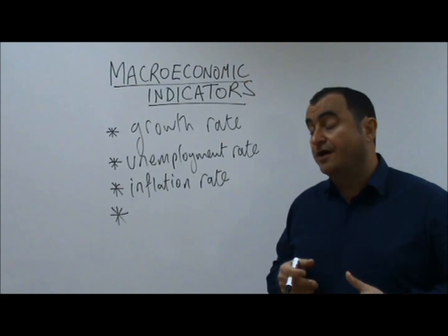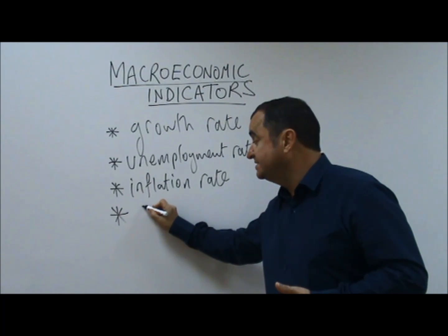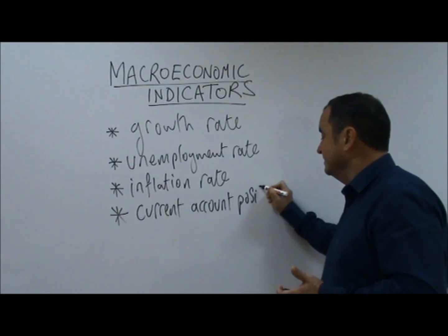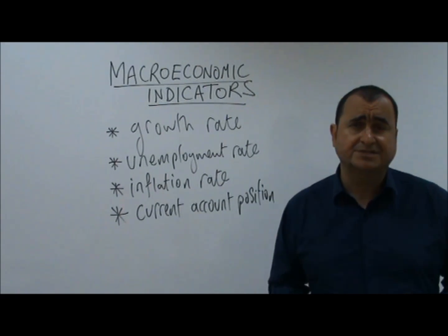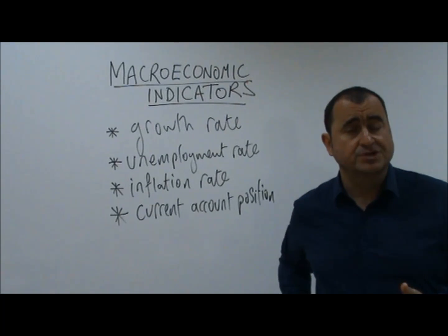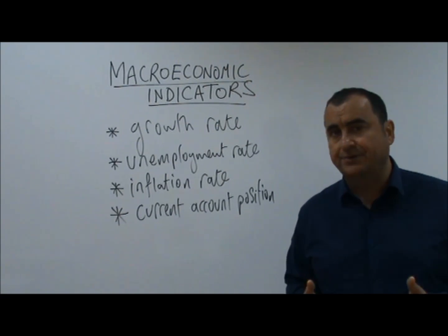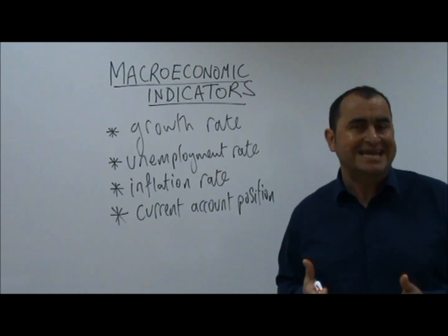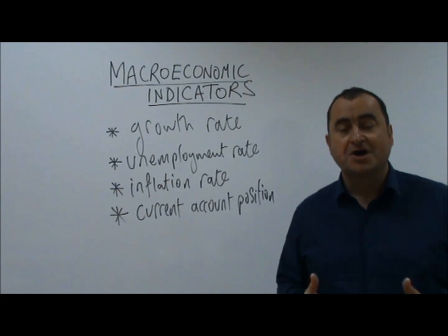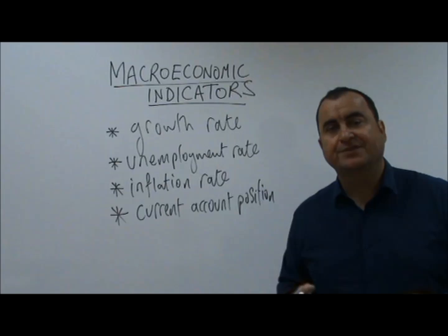Finally, a fourth macroeconomic indicator is the state of the current account — the current account position. The current account is part of a document called the balance of payments, which records all the flows of money in and out of a country in a single year. Countries wish to avoid large current account deficits; the account will be in deficit or surplus.